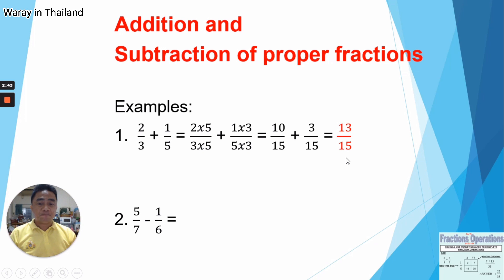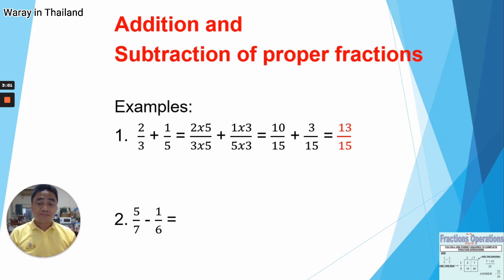Now we go to the second one. We have 5 over 7 minus 1 over 6. We have here again 7 and 6. We cannot subtract this because our denominators are not the same. So we need to know first what is the common denominator between 6 and 7, or the LCM. So what is the LCM between 6 and 7? That is 42.